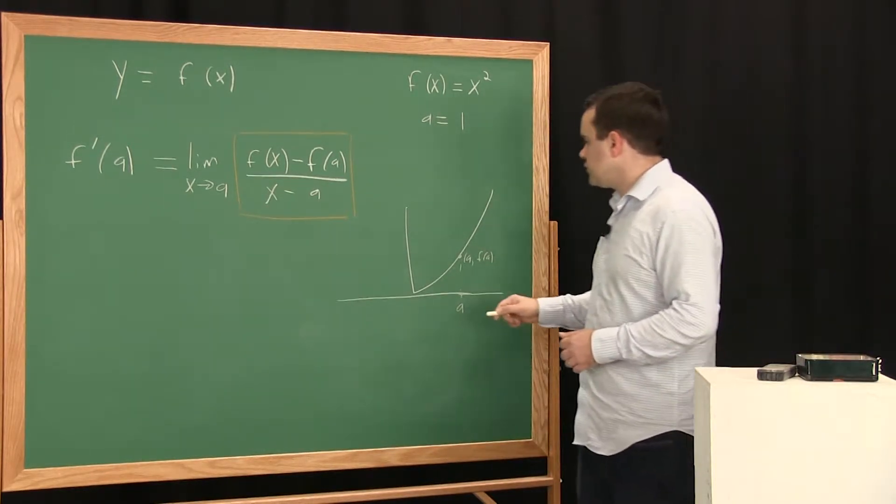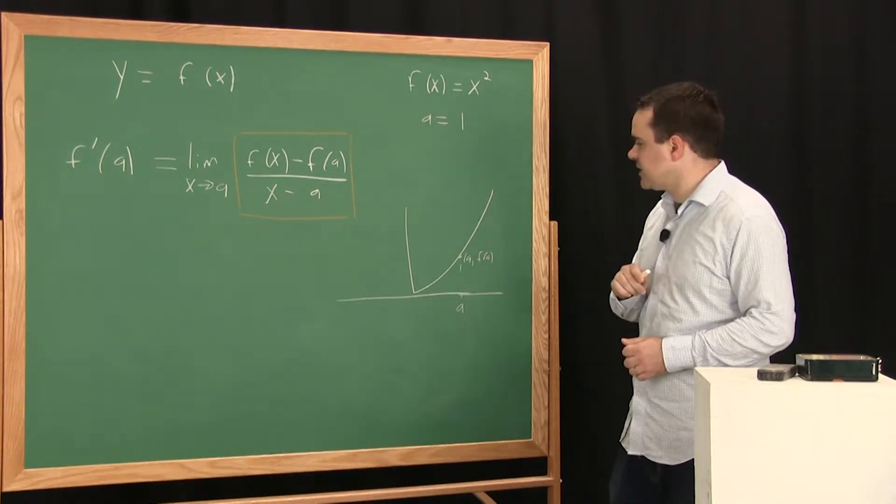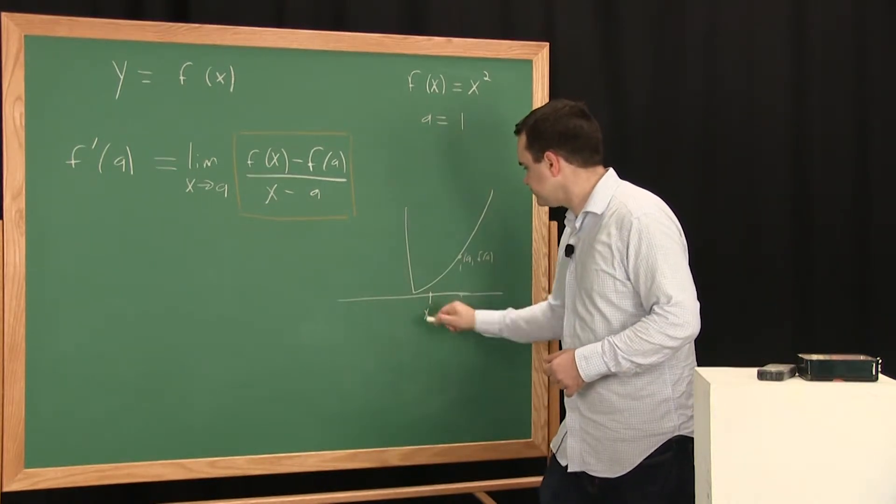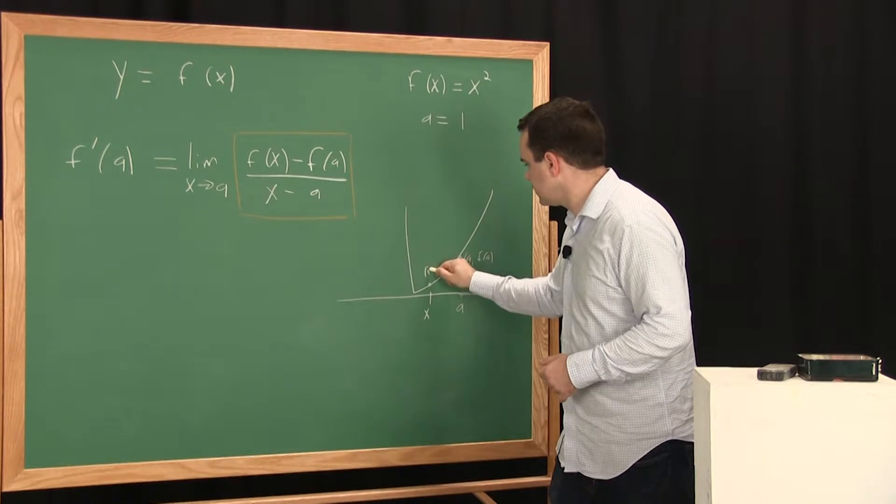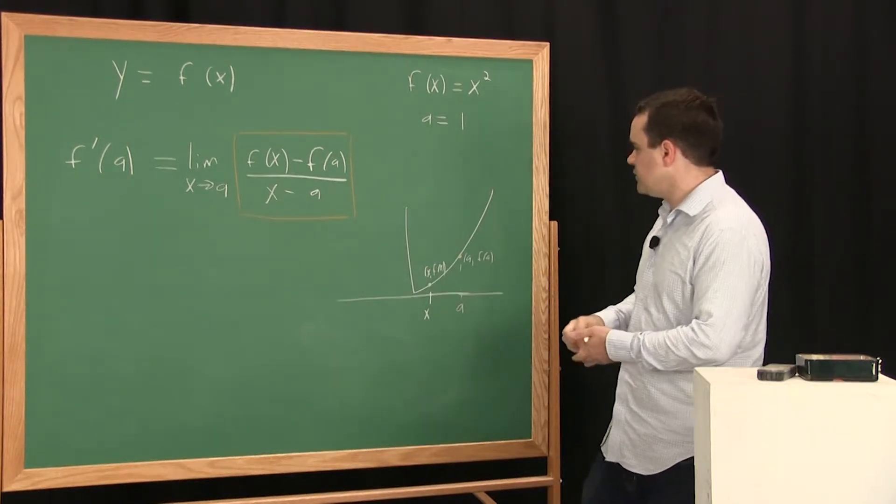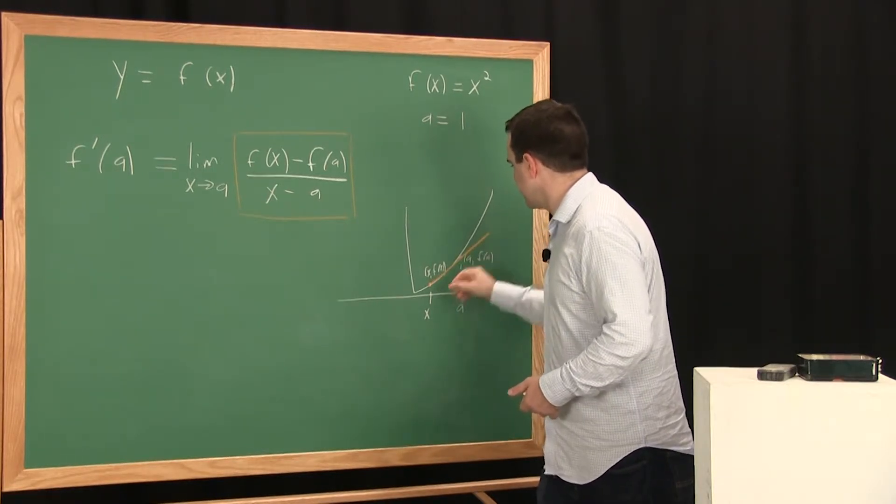And you could look at different secant lines. So imagine that x is really close to a, but I'm going to draw it far away so you can see it. And here you've got the point x, f of x. And you draw the secant line between them, which is just the line that goes between those two points.